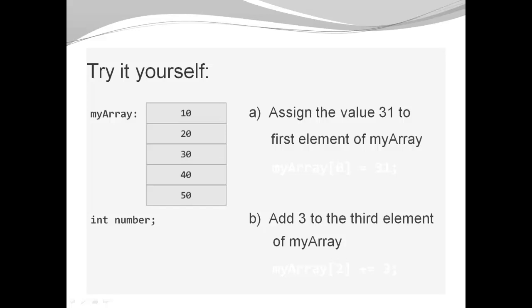Now it's your turn — try it for yourself. You have the same array we've used all along and the variable number. Two challenges: A. Assign the value 31 to the first element of myArray. B. Add 3 to the third element of myArray. Pause the video and try it for yourself. When you're ready, press Continue.